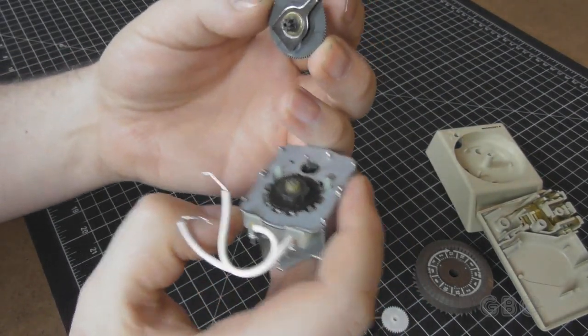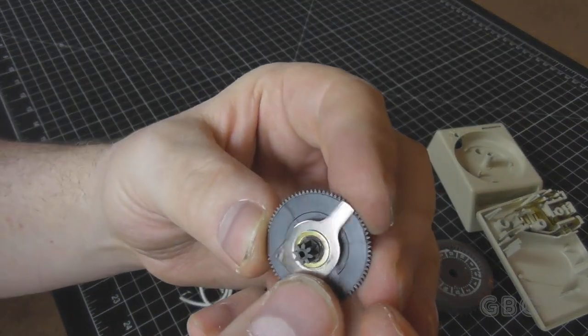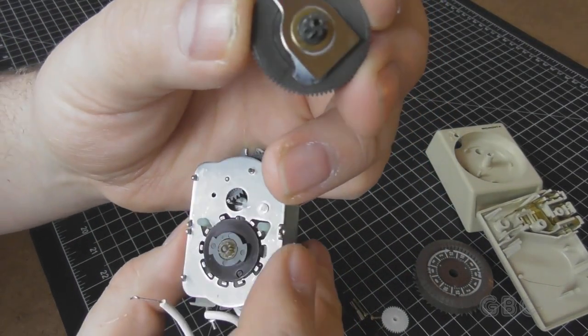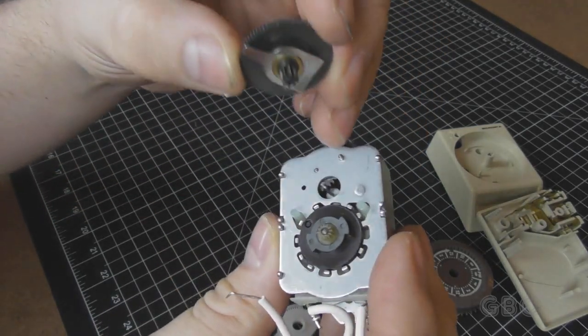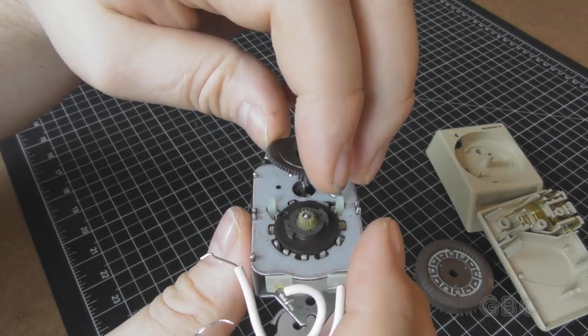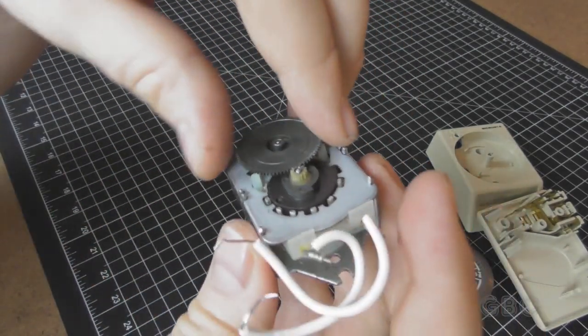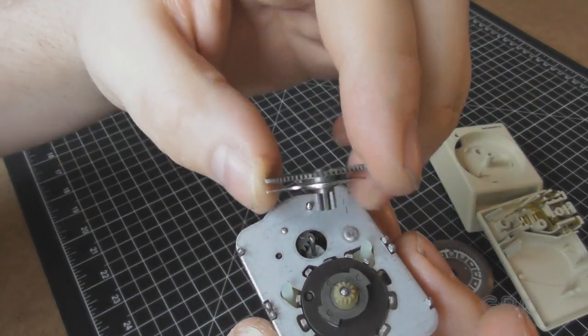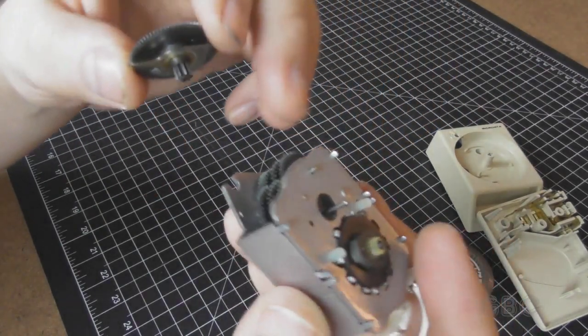Pull the gear off and we can get a better look at it. And this is what was allowing it to only rotate in one direction. It would hit this piece and stop it. So these two plastic pegs were aligning this metal tab into the right position to stop the gear from rotating in one direction but not the other.